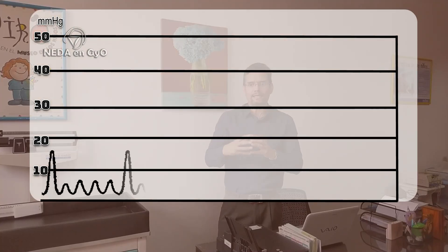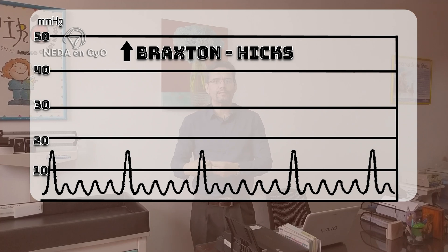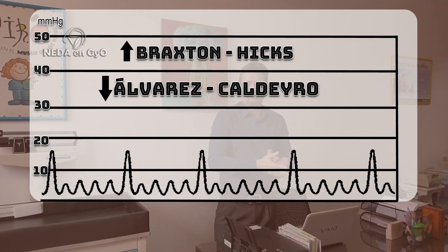Braxton Hicks contractions are present at much lower frequency during the first 30 weeks. But what happens when the pregnancy goes above 30 weeks? There will be an increase in the number of Braxton Hicks contractions and a significant reduction in Álvarez-Calderiro contractions. After 30 weeks, we will have a contraction of 15 mmHg with a frequency of about 1 in 60 minutes. The patient can perceive it or even have symptoms of pain, but it is considered a normal contraction in the normal evolution of pregnancy.